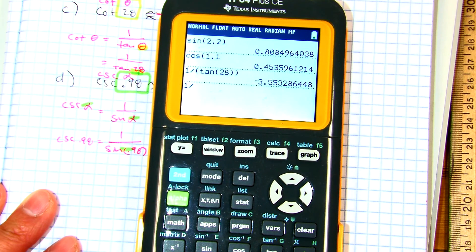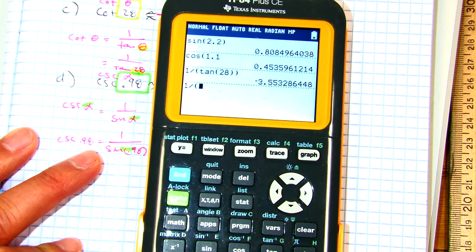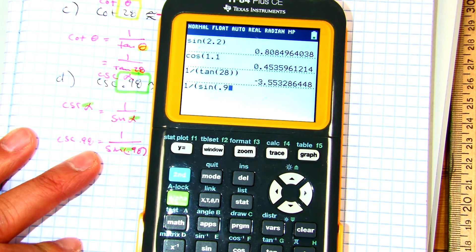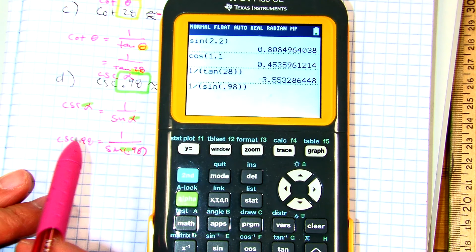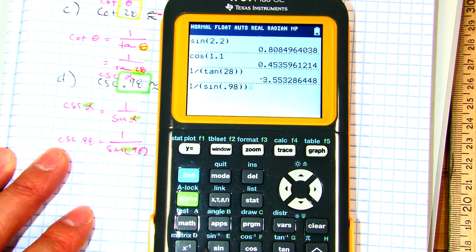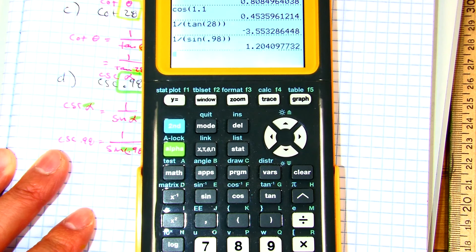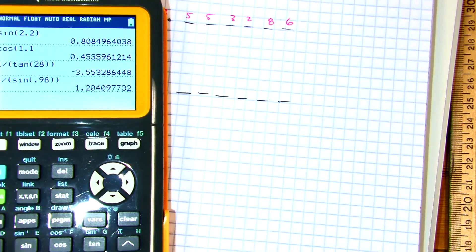1 divided by sine 0.98. Just to remind you, in today's lesson, we have to use the reciprocal identity because cosecant is not in your calculator. And that's your answer. Push back to us. Have a good night.